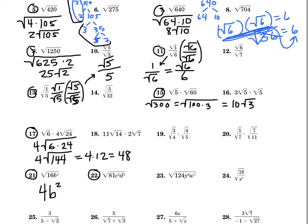Problem 22: square root of 81 is 9. But I can't take the square root of c to the 5th directly, so let's break it up into c to the 4th times c. I can also take the square root of d to the 4th, which gives d squared — no d left inside. Square root of c to the 4th is c squared, so I can take out c squared but leave that remaining c inside. The final answer is 9c²d² root c.